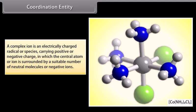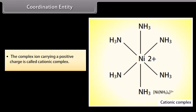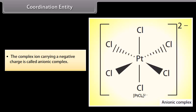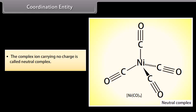A complex ion is an electrically charged radical or species carrying positive or negative charge, in which the central atom or ion is surrounded by a suitable number of neutral molecules or negative ions — for example, [Co(NH3)4Cl2]. The complex ion carrying a positive charge is called a cationic complex, for example [Ni(NH3)6]2+. The complex ion carrying a negative charge is called an anionic complex, for example [PtCl6]2−. The complex ion carrying no charge is called a neutral complex, for example Ni(CO)4.